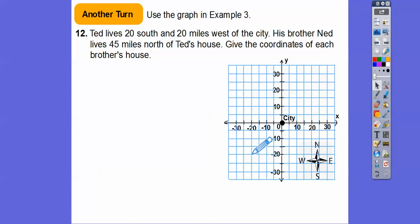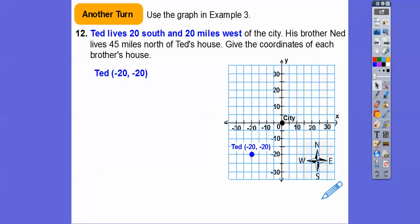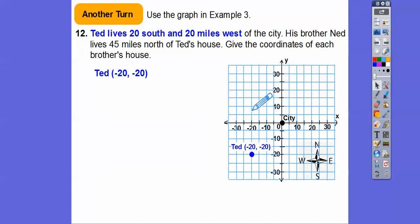Give the coordinates of the brothers' houses. Ted would be negative twenty, negative twenty. His brother Ned lives forty-five miles north of Ted's house, so we go straight up: five, ten, fifteen, twenty, twenty-five, thirty, thirty-five, forty, forty-five.